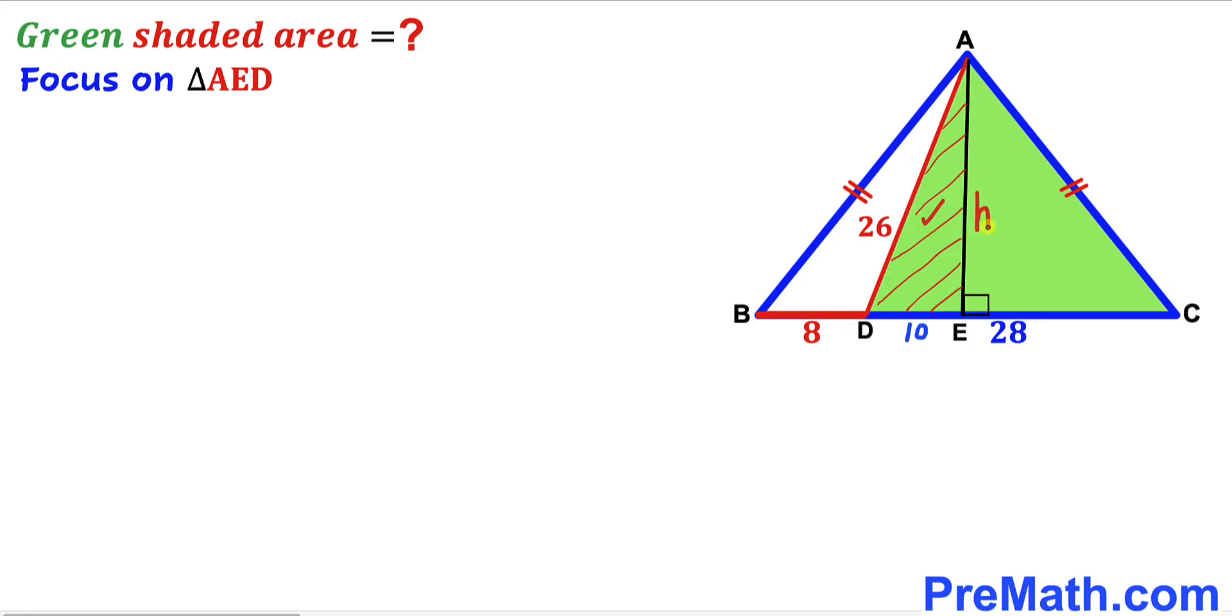We're going to apply the Pythagorean theorem on this triangle. The theorem is a² + b² = c². In our case, the hypotenuse is 26 and our two legs are h and 10 units. So we have h² + 10² = 26².